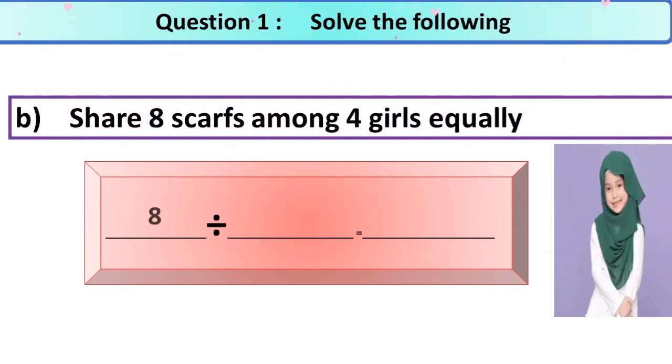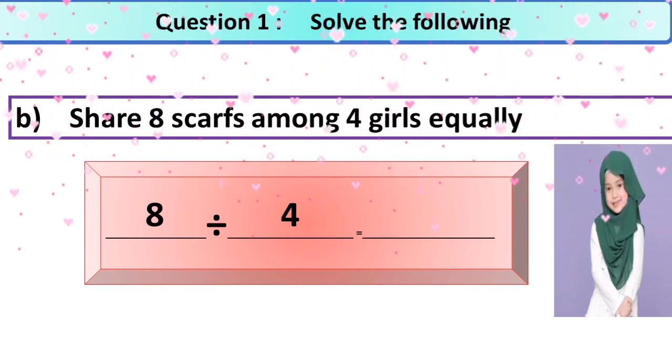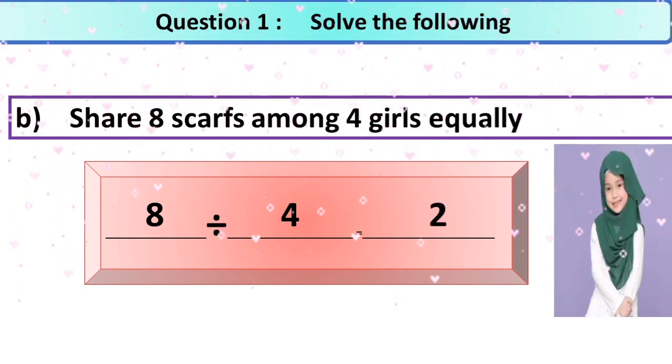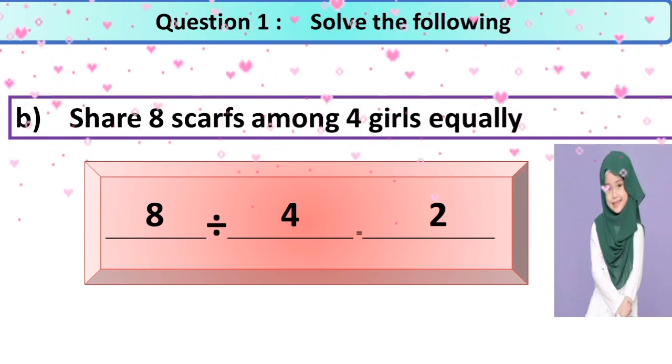The second part: share 8 scarves among 4 girls equally. 8 divided by 4. Simply you are going to read the times table of 4. 4 ones are 4, 4 twos are 8. Simply 4 twos are 8, so it means that here you are going to write 2. So each girl got two scarves.